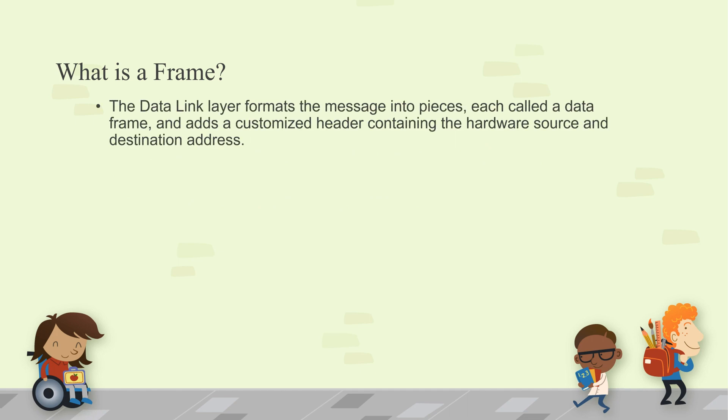What is a frame? The Data Link layer formats messages into pieces, each called a data frame, and adds a customized header containing the hardware source and destination address. For Layer 2 traffic, it will be in a frame containing the source MAC address and destination MAC address.